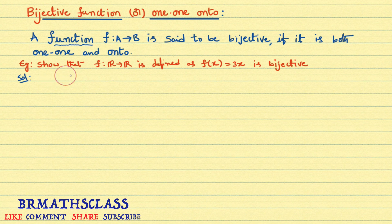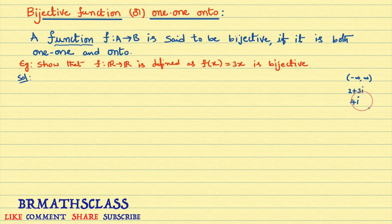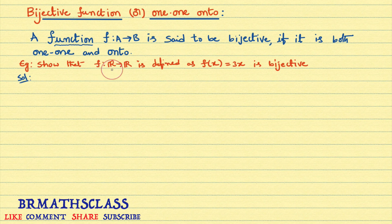See this example: show that the function defined from the set of all real numbers to real numbers. Real numbers means all the numbers between minus infinity to plus infinity. For example, root 3 (which is 1.732) is a real number, 1/2 is a real number, 2.45678 is a real number. All the numbers you know are real numbers except imaginary numbers like 2+3i or 4i. This function's domain is the set of all real numbers and its co-domain is also the set of all real numbers. The function is defined as f(x) = 3x. We need to show that this function is a bijective function.